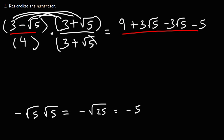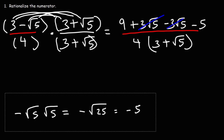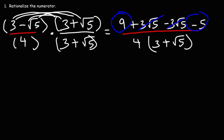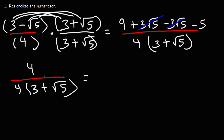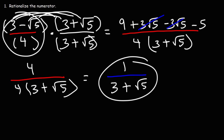We could distribute the 4 to 3 plus the square root of 5, but I'm going to leave it like this because with these problems sometimes you can cancel something on the bottom. Now let's simplify the numerator. Positive 3 root 5 and negative 3 root 5 are going to cancel, adding up to 0. So we're left with 9 minus 5, which is positive 4. We have a 4 on top and a 4 on the bottom — 4 divided by 4 is 1. So the final answer is 1 over 3 plus the square root of 5.